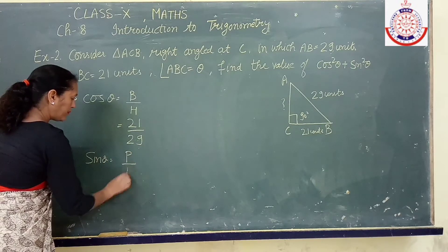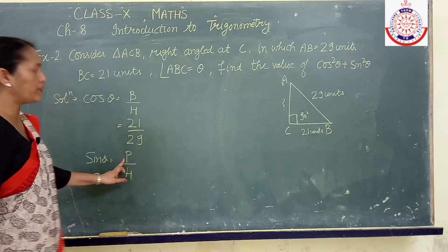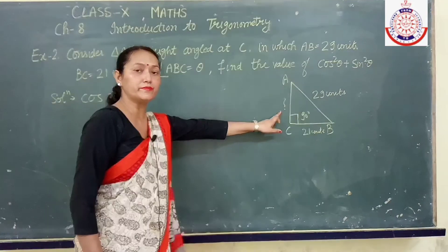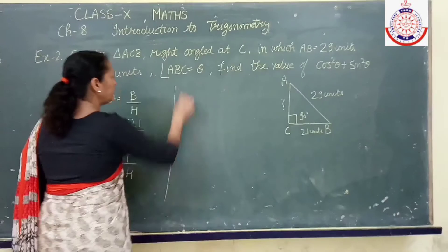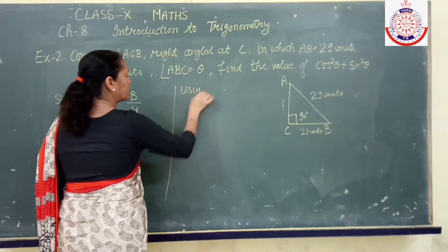Now cos theta value I have obtained very easily but what about sine theta. Sine theta is perpendicular upon hypotenuse but perpendicular is not here so first of all we will obtain perpendicular using Pythagoras theorem.